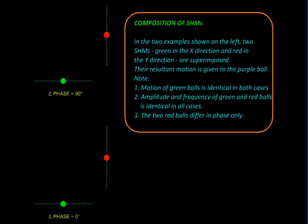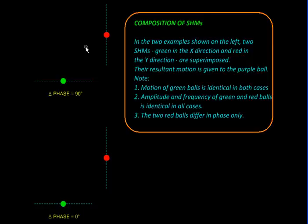So far we have seen what is simple harmonic motion, or SHM for short. Now we are going to see how to combine two simple harmonic motions together to get their composition. We are going to start with a simple case where we have a green and a red particle both executing simple harmonic motions of the same amplitude, so they will be moving over the same distance, of the same frequency, so they will do so with the same rapidity. But we are going to make one little change, and that is the change in phase.